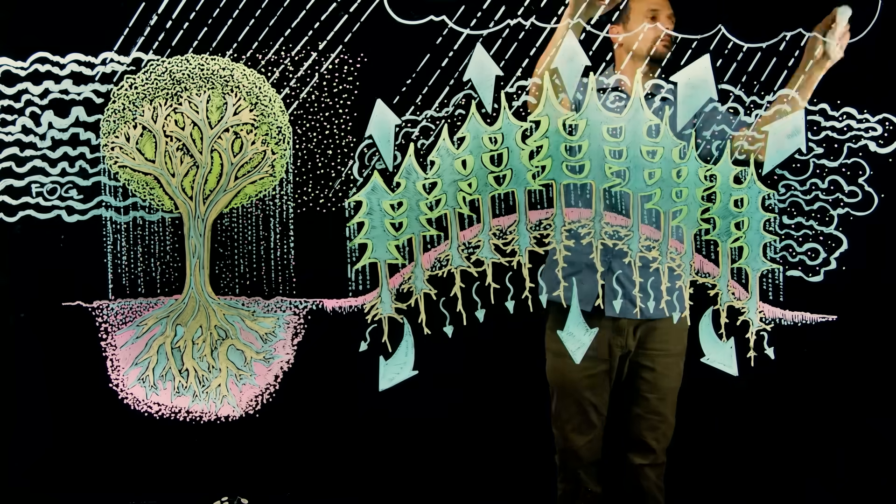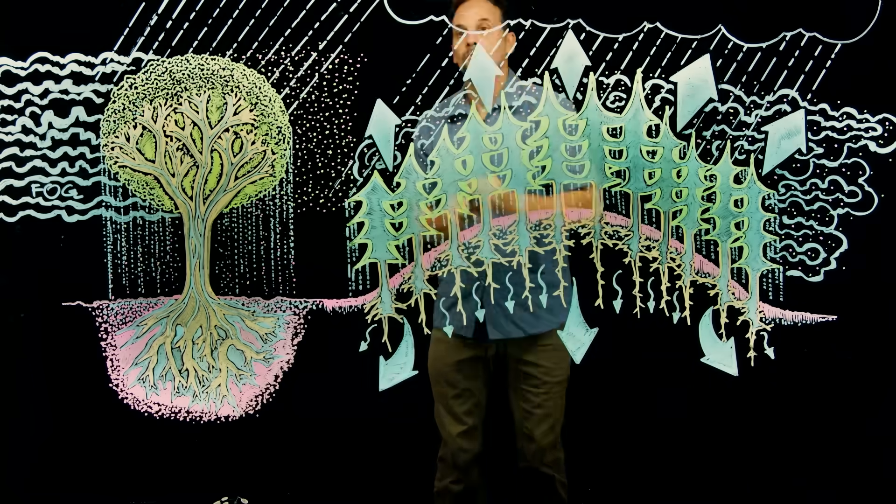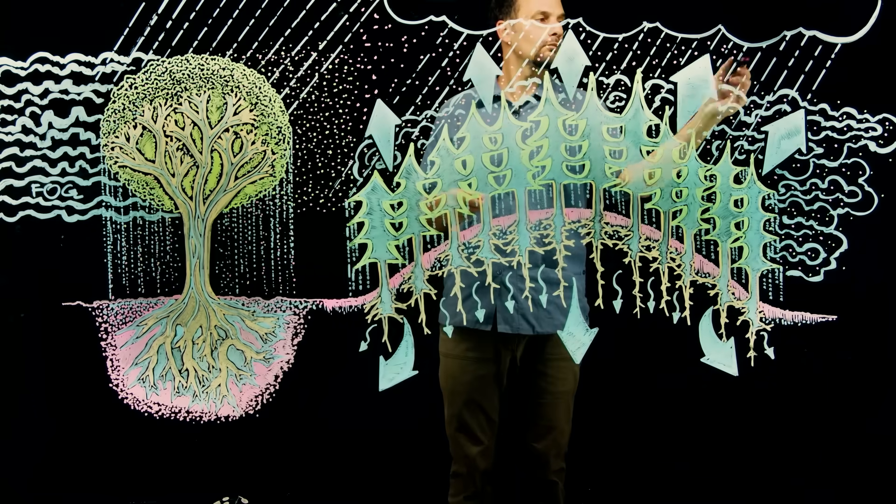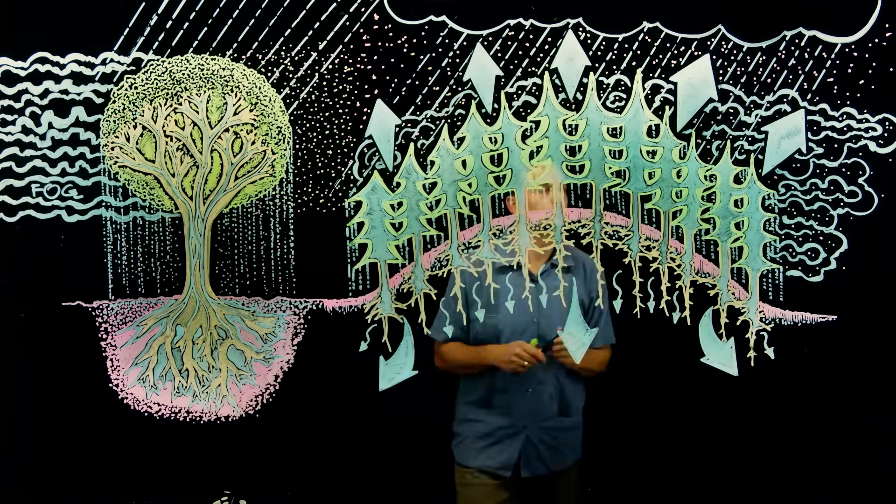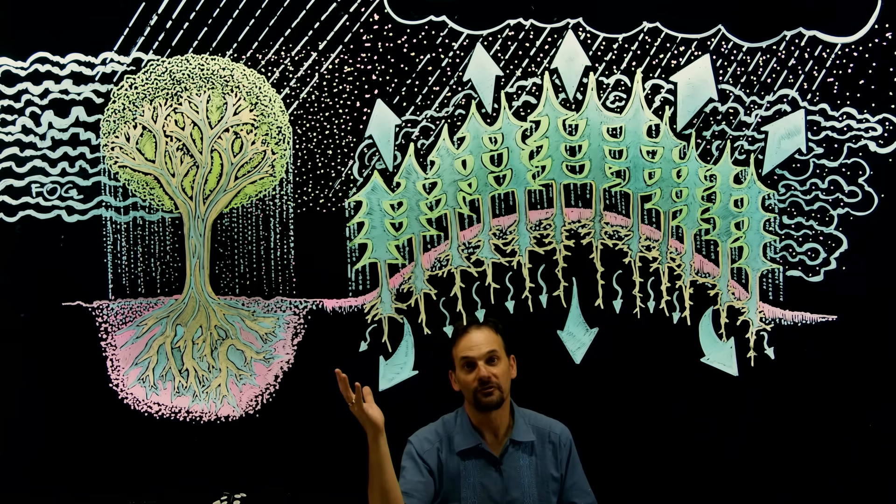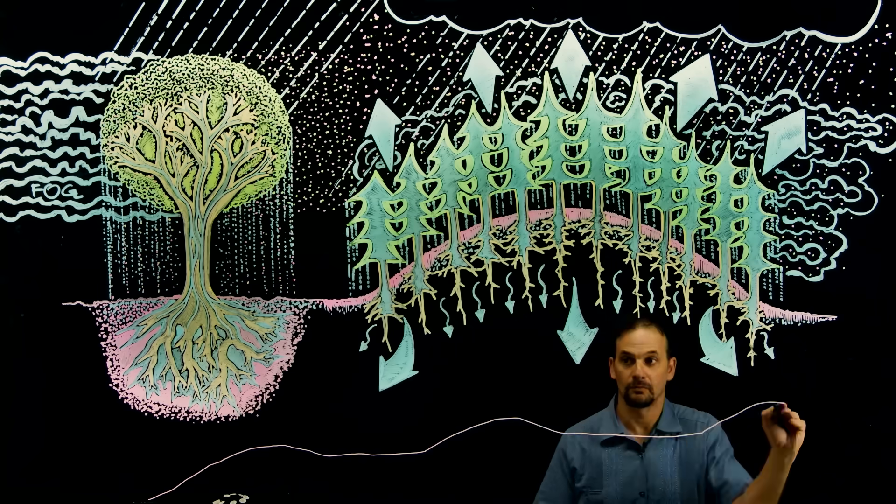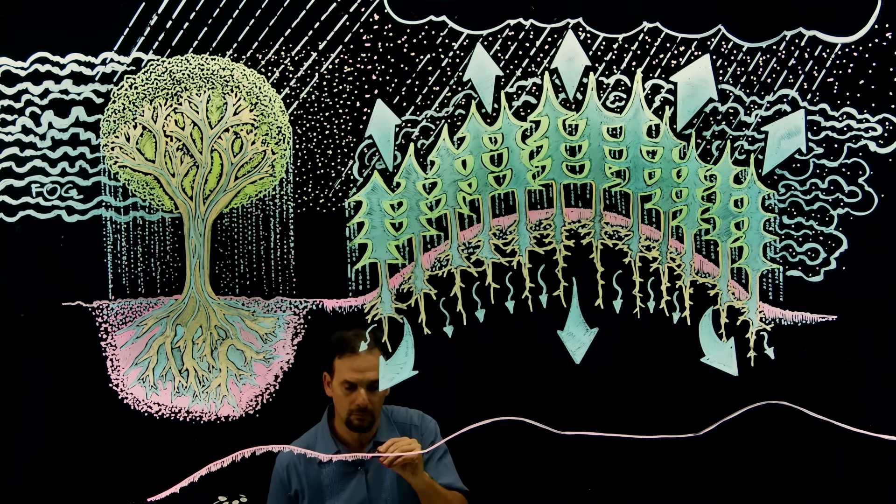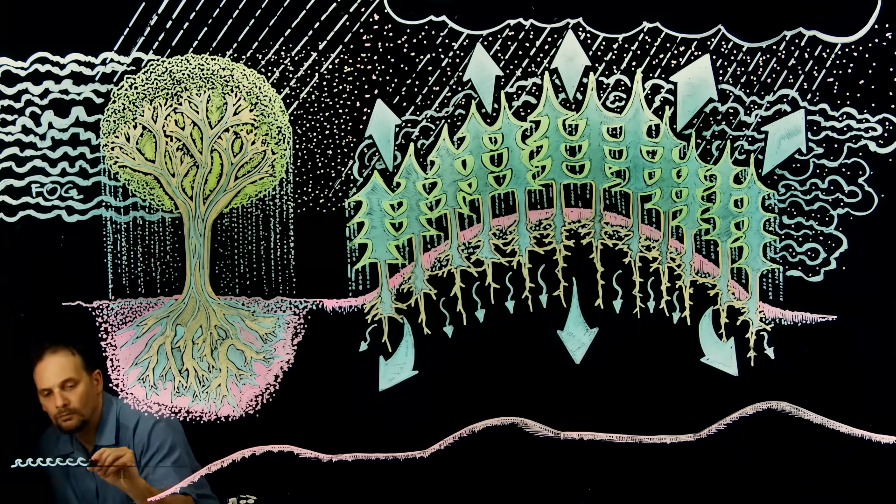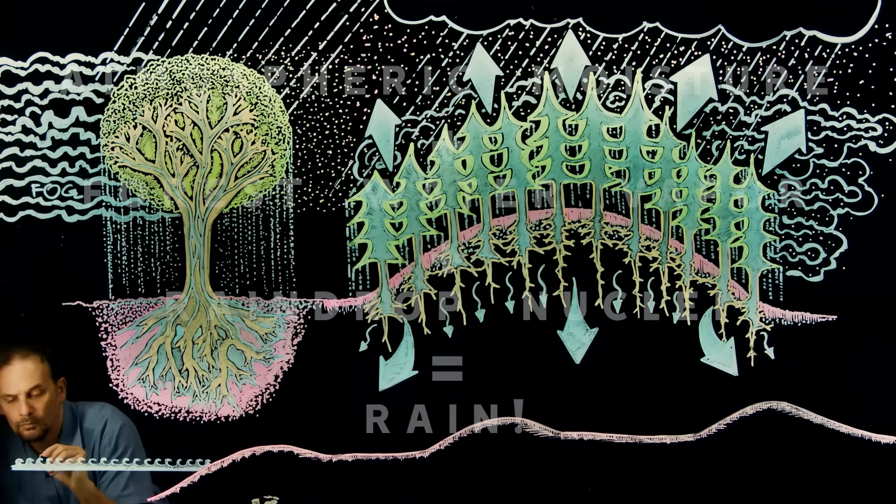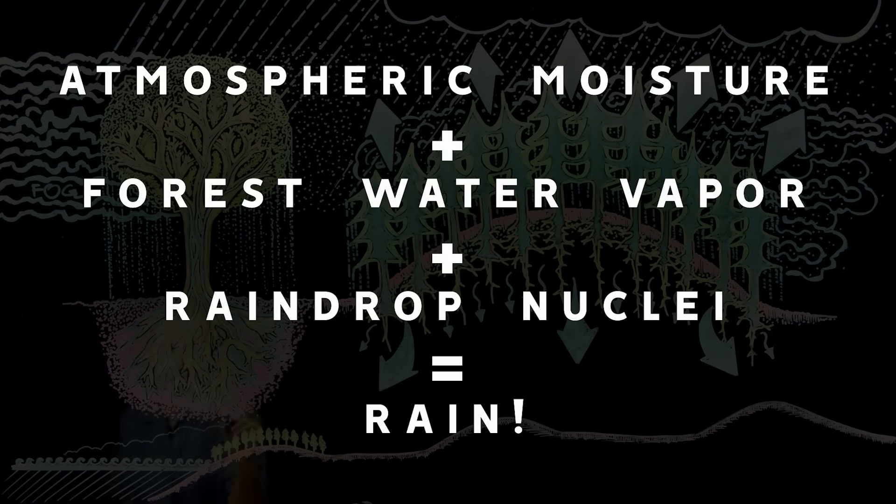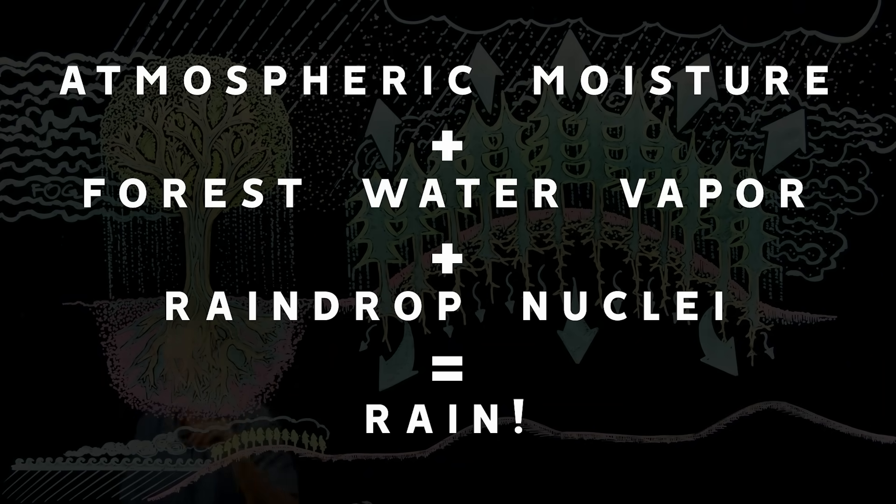When these tiny particles encounter moisture floating through the atmosphere like clouds, then the forest particles provide nuclei for raindrops to form around. So, we have clouds that have formed from evaporated water over oceans and seas, moving through the atmosphere over land. And then they encounter the air above a forest, which is filled with water vapor and organic particles. And guess what happens when they all meet? It rains.